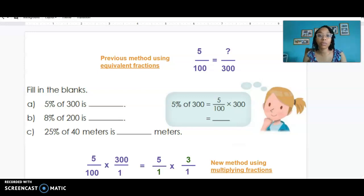So I want you to use the multiplication method to figure out what 8% of 200 is. Remember you're going to set that up as 8 over 100 times 200 over 1, so find that answer. And I also want you to find problem C: 25% of 40 meters, that's 25 over 100 times 40 over 1. So those are the two problems you need to calculate. Pause the video now, give yourself a little minute and you'll see the answers on the next slide.